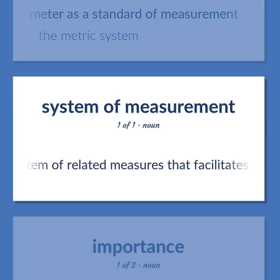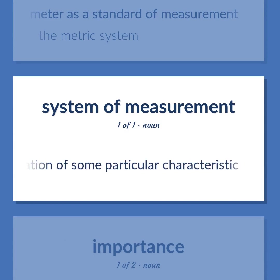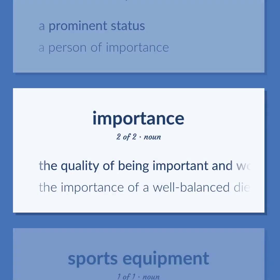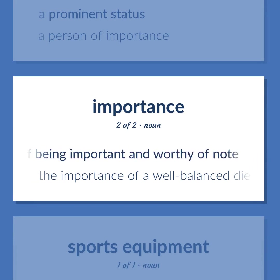A system of related measures that facilitates the quantification of some particular characteristic. Importance: A prominent status. A person of importance. The quality of being important and worthy of note. Example: The importance of a well-balanced diet.